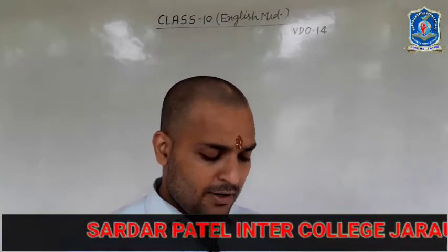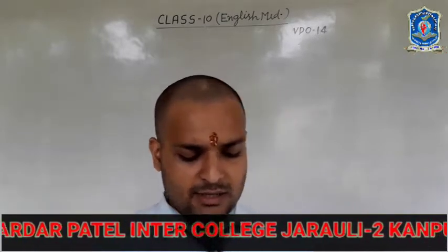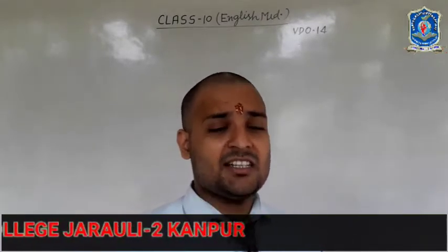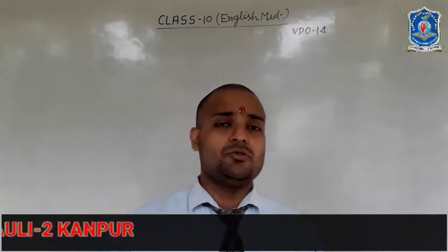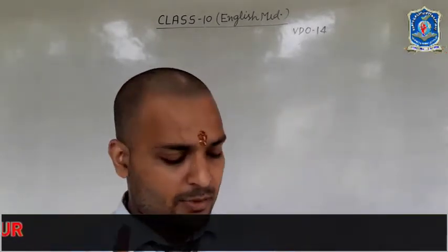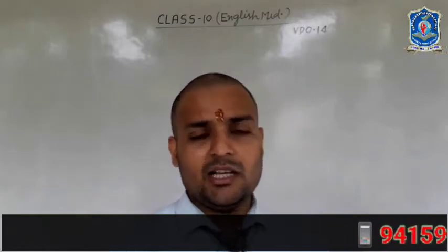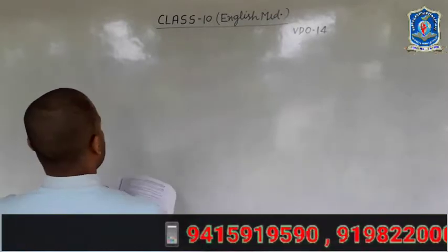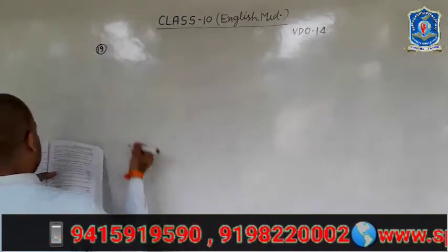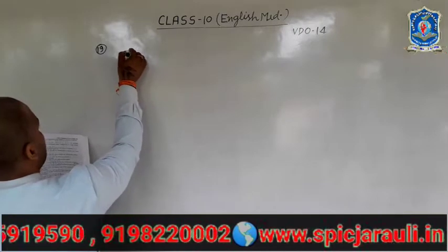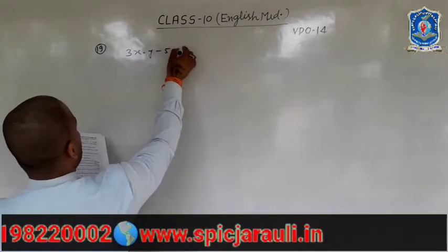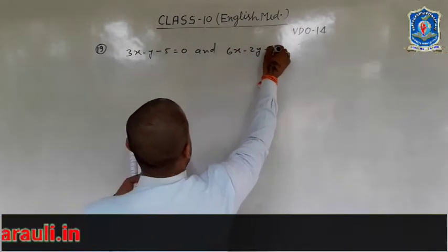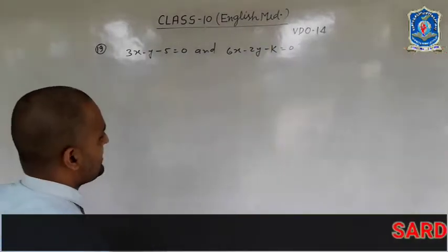In question number 19, find the value of K for which the system of equations 3x minus y minus 5 equals 0 and 6x minus 2y minus K equals 0 has no solution. The condition for no solution is that A1/A2 equals B1/B2 but does not equal C1/C2.